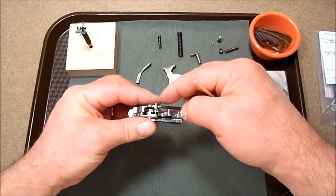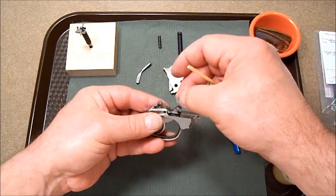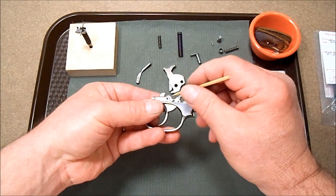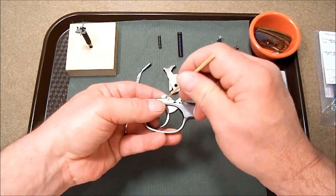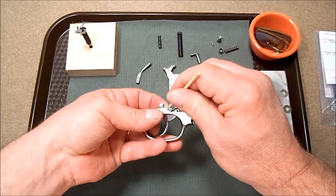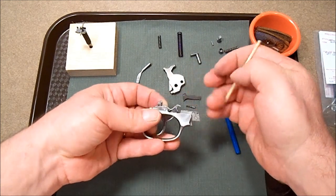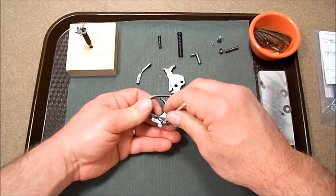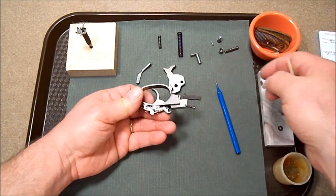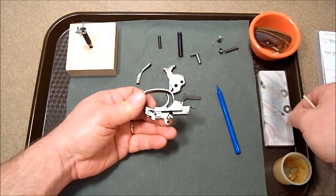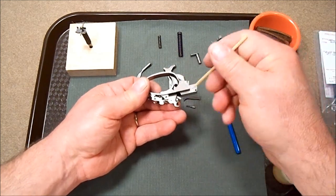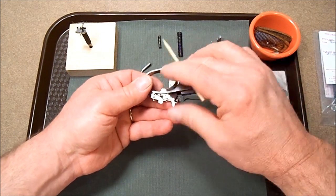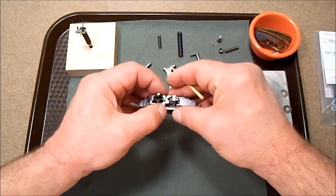Now I slid the trigger pin over about halfway. I'm going to set a shim in. And then pushing back up from the bottom, I slide the trigger pin back in. I'm going to do the same thing to the other side. There we go.